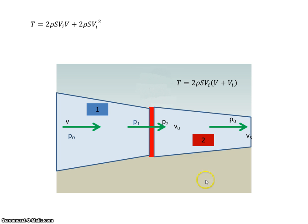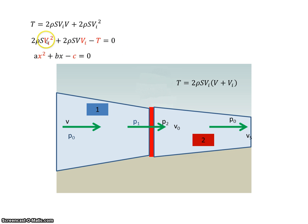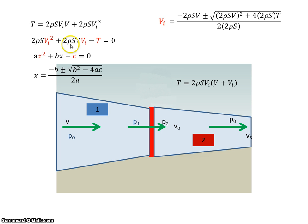On the thrust, if I multiply it out: 2ρ·S·V·VI plus 2ρ·S·VI² equals the thrust. Bringing everything to one side gives an equation where, treating VI as x, we have A·x² + B·x + C. We can solve this with the quadratic formula, so VI equals minus B — which is minus 2ρ·S·V — plus or minus the square root of (2ρ·S·V)² minus 4·A·C. Here 4 times A is 2ρ·S, and C is minus T, so the minus-minus gives a plus, all over 2A which is 2ρ·S.